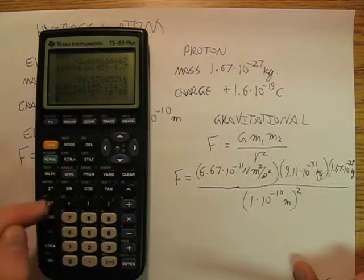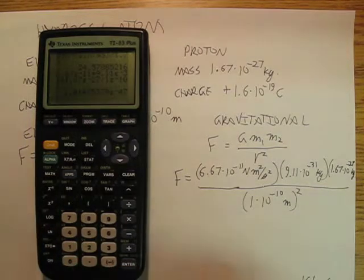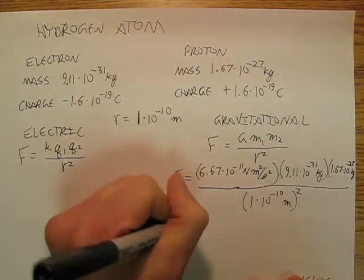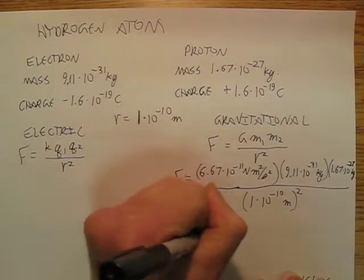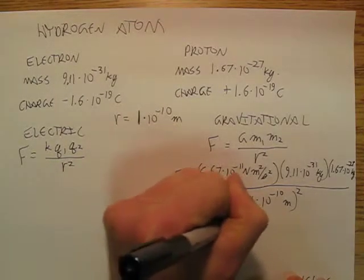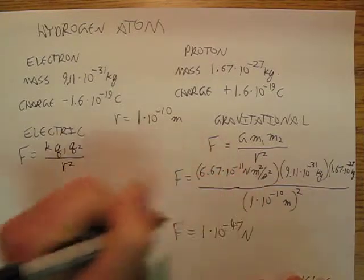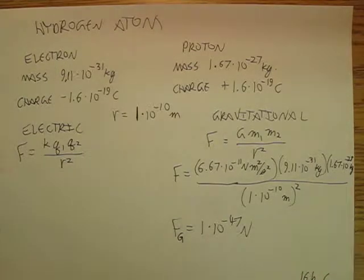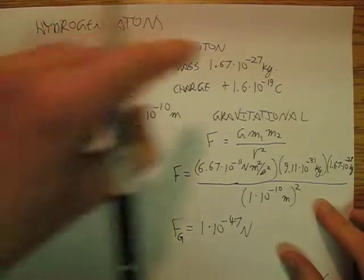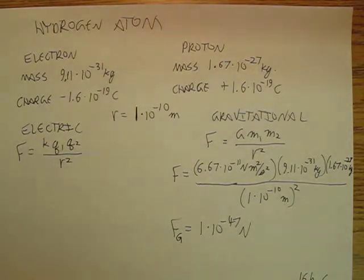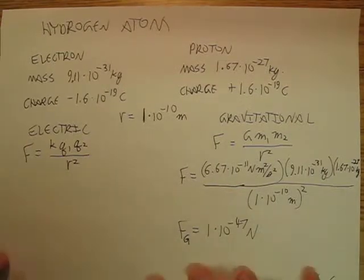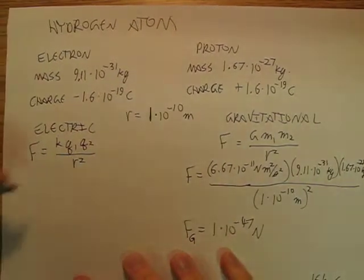And square that, and I get 1 times 10 to the negative 47th newtons. Which is not surprising because this is a very small mass, and that's a very small mass, and there is very little gravitational force between an electron and a proton.